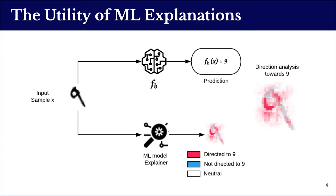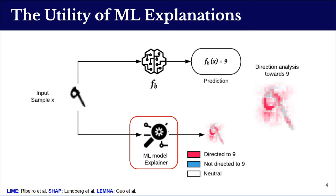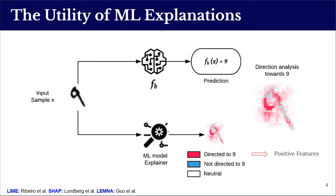For this purpose, we employ machine learning explanation methods. We harness methods such as LIME, SHAP, or LEMNA to investigate the effectiveness of each single feature perturbation. We consider a handwritten digits classifier represented by FB here — it correctly predicts the label of an input image. The explainer reveals the feature direction of each pixel: pink pixels directed to the true label '9' explain the correct prediction and are called positive features, while blue pixels are called negative features and white pixels are neutral to the classification decision.